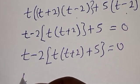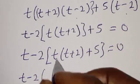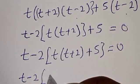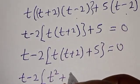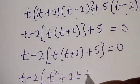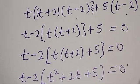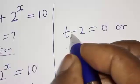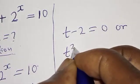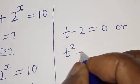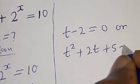Expanding, we have t minus 2 into t squared plus 2t plus 5 is equal to 0. Therefore t minus 2 equals 0, or t squared plus 2t plus 5 equals 0.